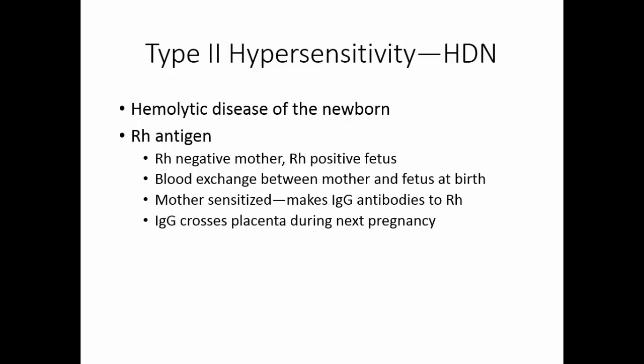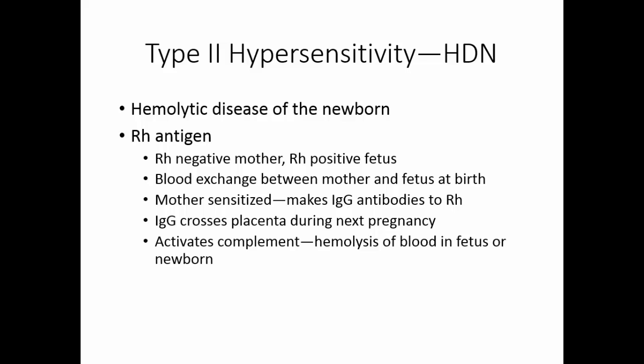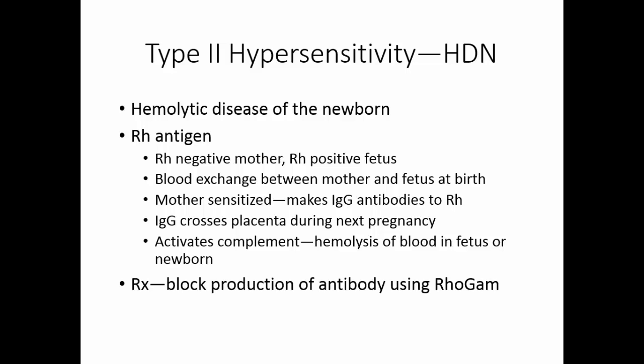IgG is a small enough antibody that it can cross the placenta. So during the next pregnancy, this IgG will cross the placenta, and if the next fetus is also RH-positive, then these antibodies will coat the blood cells of the fetus, will activate complement, and will cause hemolysis of those blood cells. The treatment for this is to block the production of the antibody in the mother using a substance called RhoGAM. Any RH-negative mother is usually given RhoGAM just in case the fetus is RH-positive.